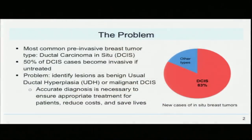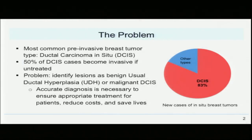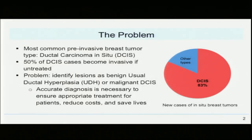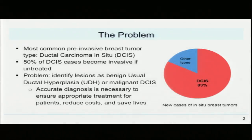Breast cancer is the single most common type of cancer in women. It not only accounts for about 30% of all cancers, but it also leads to 40,000 deaths per year. The most common pre-invasive breast tumor type is ductal carcinoma in situ, constituting about 83% of new cases of in situ breast tumors. Around 50% of these DCIS cases become invasive if untreated, so early detection is crucial.